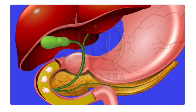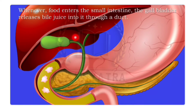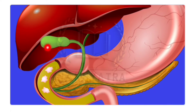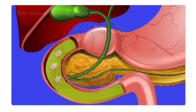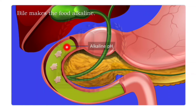The bile juice is stored in the gallbladder. Whenever food enters the small intestine, the gallbladder releases bile juice into it through a duct. The bile makes the food alkaline — this is how the food gets an alkaline pH in the small intestine.